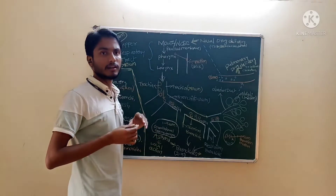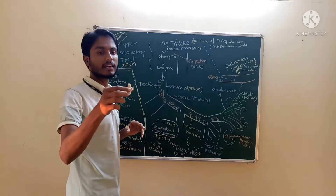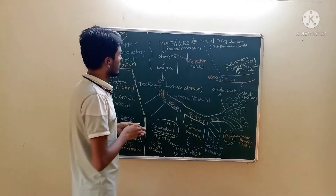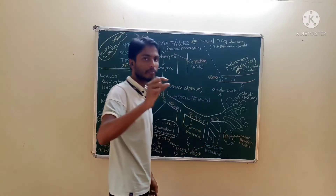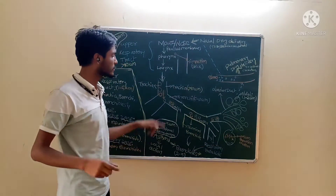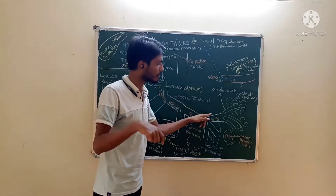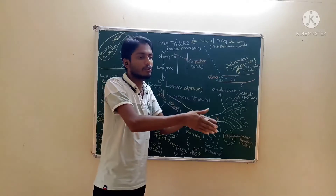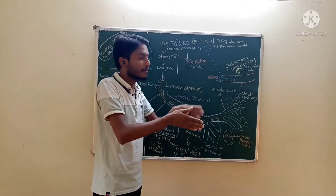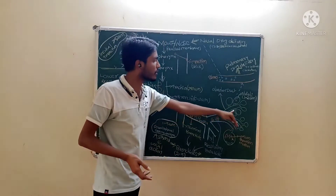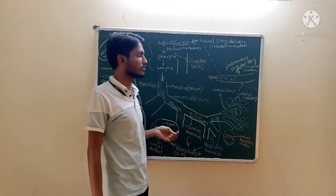Now, what kind of particles — what diameter — will settle where? As we go from the top to the bottom of the lungs, the diameter of the trachea, bronchia, terminal bronchia, respiratory bronchia, and alveolar ducts is reduced. The diameter of this pipeline reduces as you move from the mouth to the alveolar duct.